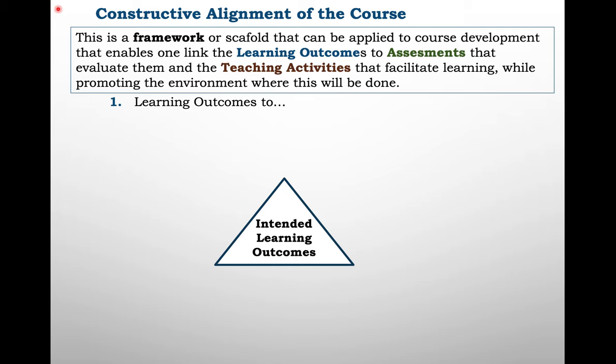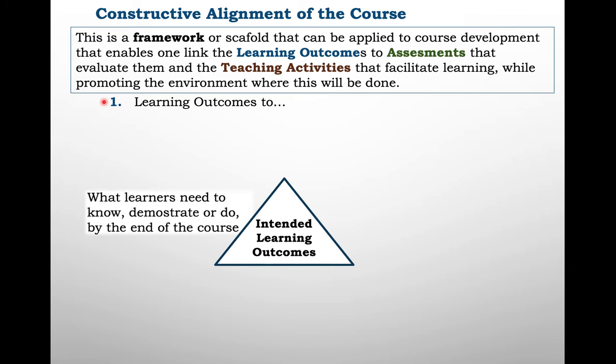Let's start with the learning outcomes. In parts two, three, and four we looked at the learning outcomes and aligned topics that will deliver content for those course-wide intended learning outcomes. Intended learning outcomes are what we want the learners to know, demonstrate, or do by the end of a particular course. These intended learning outcomes can be course-wide.